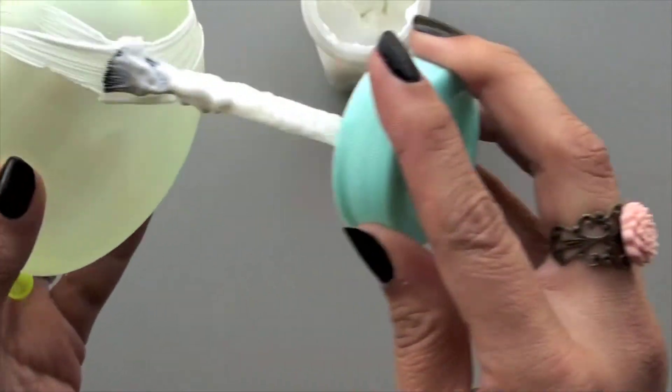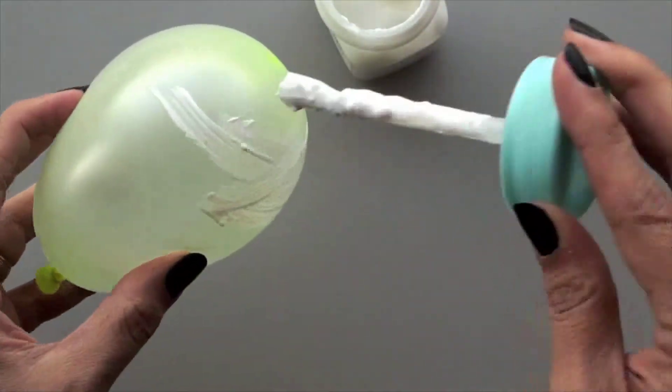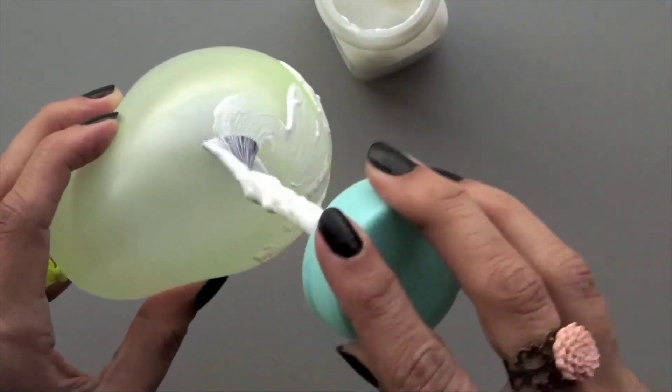Fabric glue might work too though I haven't tried that, but this one works really well. Make sure it's liquid and make sure it's for paper crafts, and we're going to go ahead and just add quite a bit of glue to the balloon.